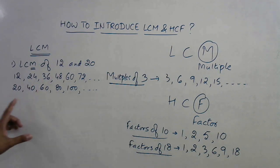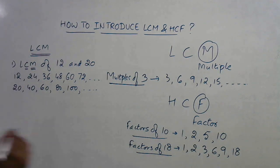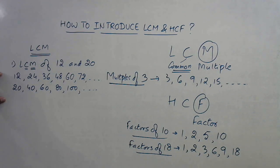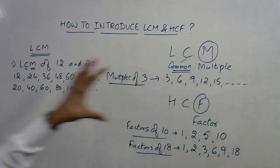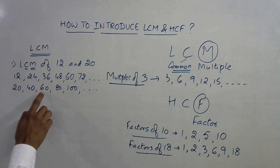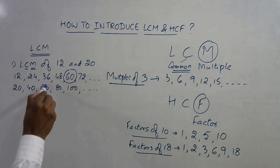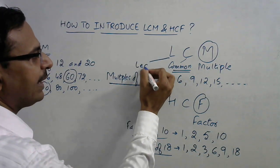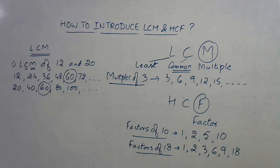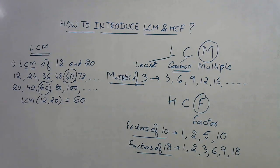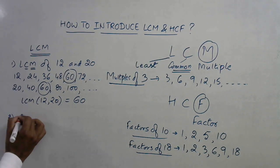Next introduce the letter C, which stands for 'common' — something which exists in both lists. Looking at the common multiples: 12 is not common, 24 is not common, 36 is not common, 48 is not common, but 60 appears in both. Then the letter L means 'least,' i.e., the smallest. Before 60 there is no other common multiple, so the LCM of 12 and 20 is 60.